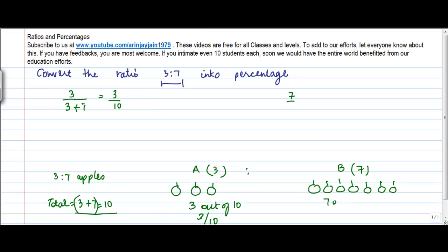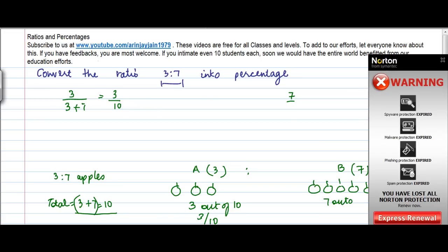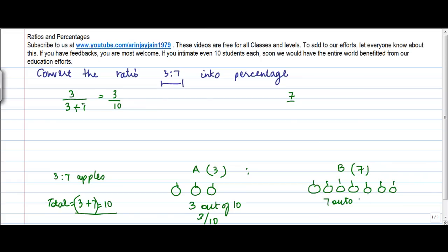And similarly B had 7 out of 10 apples, or 7 divided by 10. 7, 3 plus 7, 7 divided by 10.